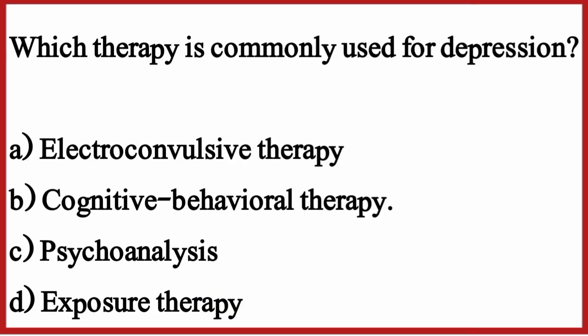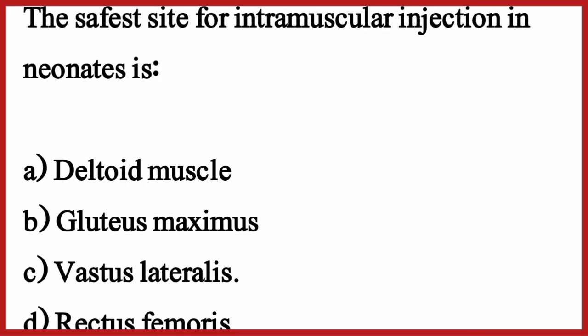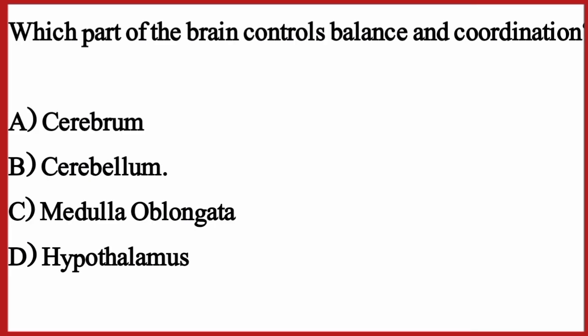Which therapy is commonly used for depression? The correct option is option D: Cognitive Behavioral Therapy. The safest site for intramuscular injection in neonates is — the correct option is option C: Vastus lateralis. Which part of the brain controls balance and coordination? The correct option is option B: Cerebellum.